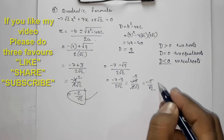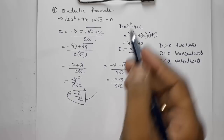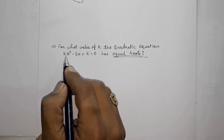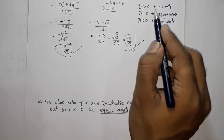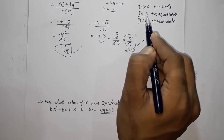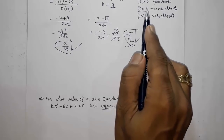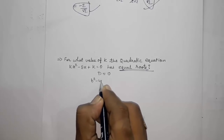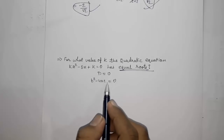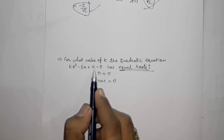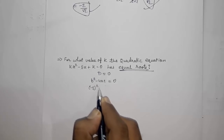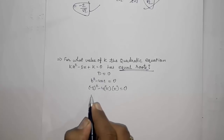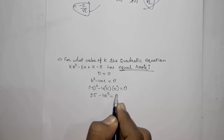Sometimes in this chapter, a sum will say the equation has equal roots and ask you to find the unknown value k. For two equal roots, the discriminant D = 0. So we set b² − 4ac = 0. Here b = −5, a = k, c = k, giving (−5)² − 4 × k × k = 0, which is 25 − 4k² = 0.